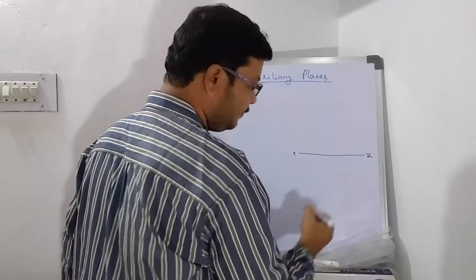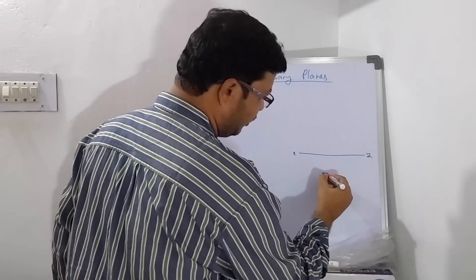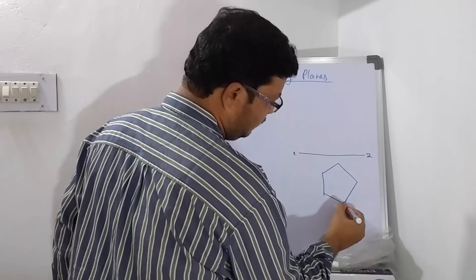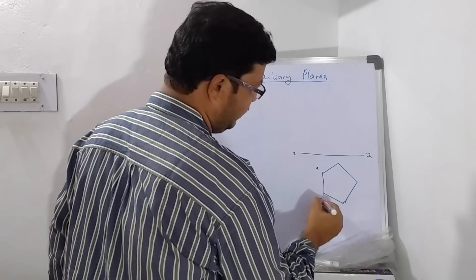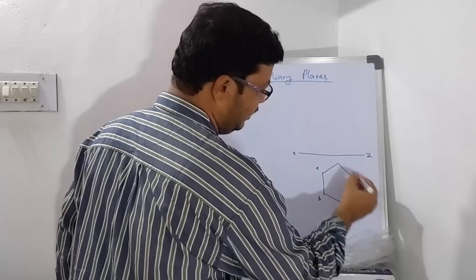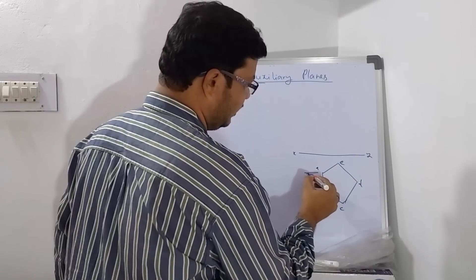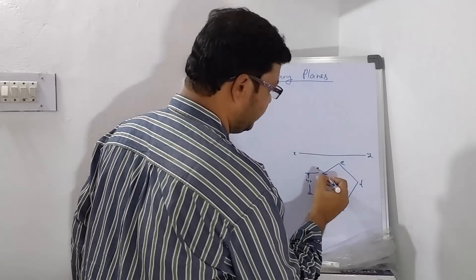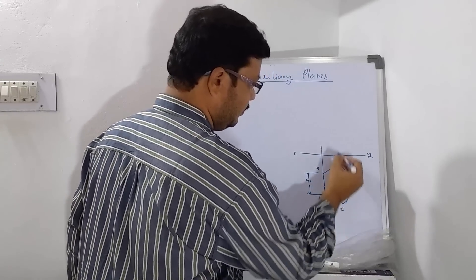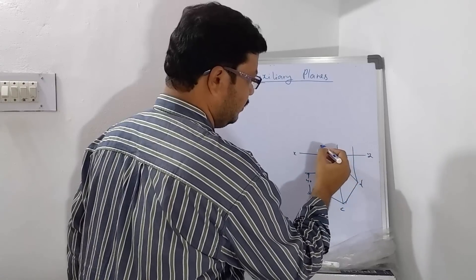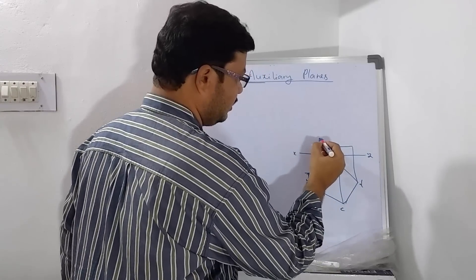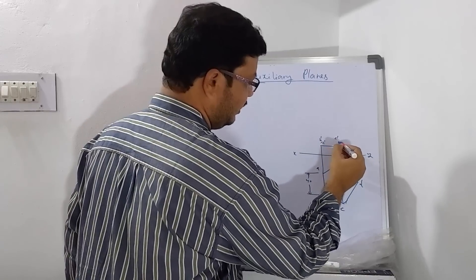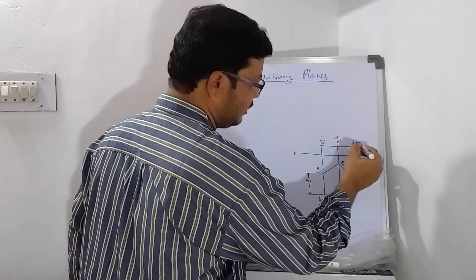This is my XY line. Somewhere here I am drawing the top view — the same top view drawn earlier. The points are A, B, C, D, and E. This side is 40 mm. Now I project the front view. This is D dash, D dash — these points are D dash.